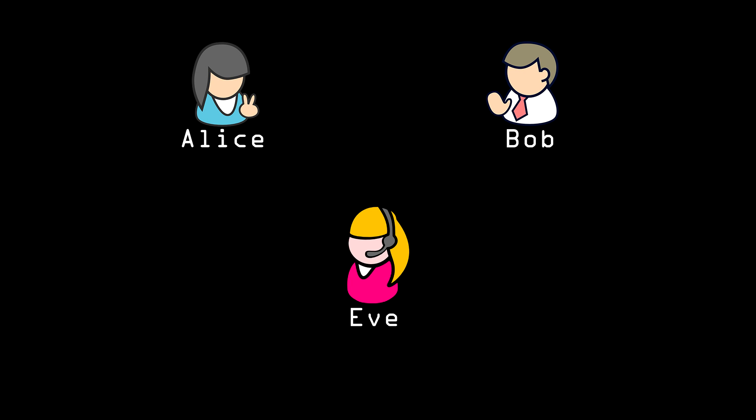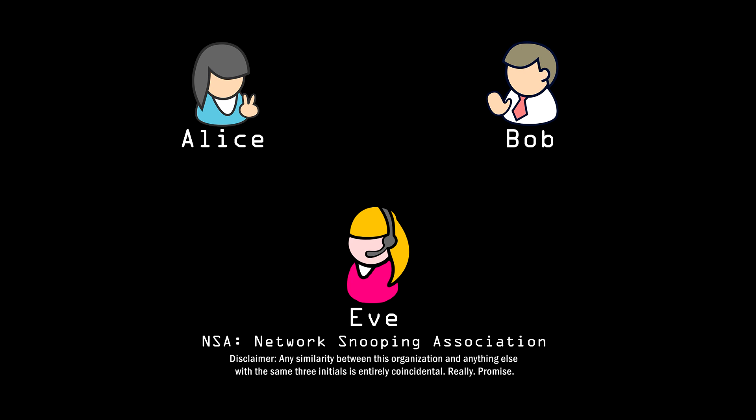Or she may actually have the power to force Alice or Bob to give up a piece of information due to her position in — well, let's just call it the Network Snooping Association, or NSA.